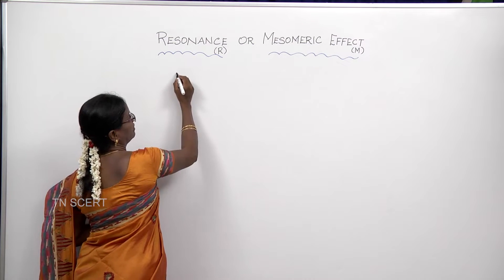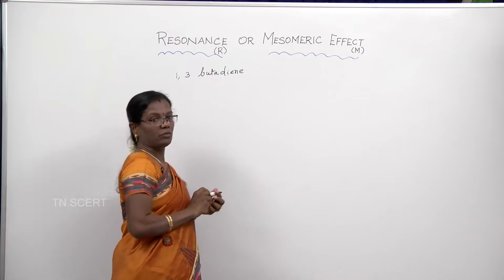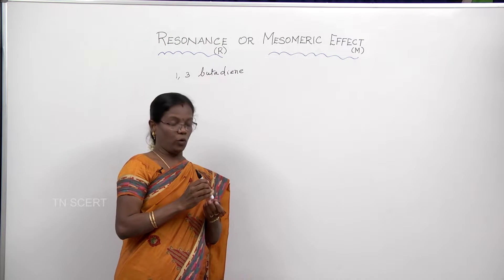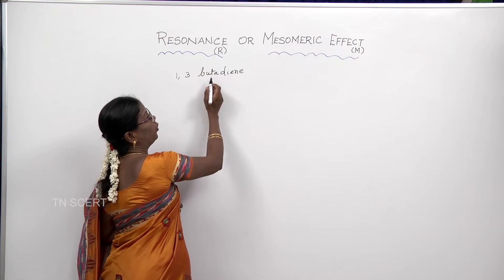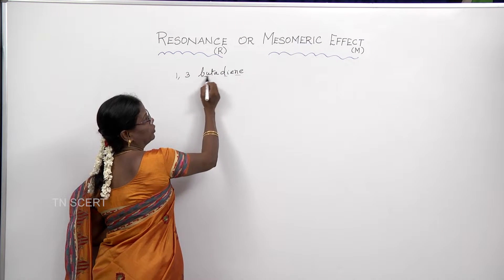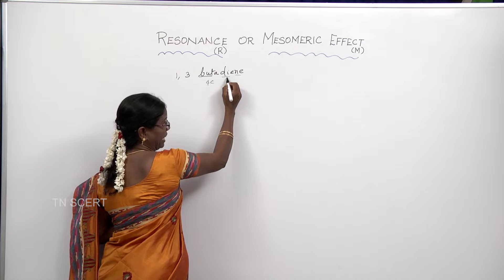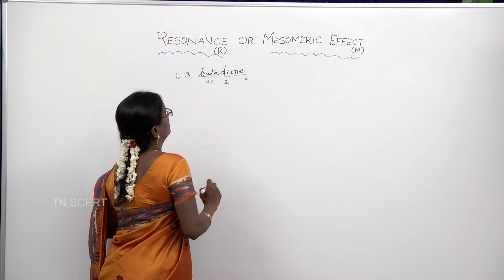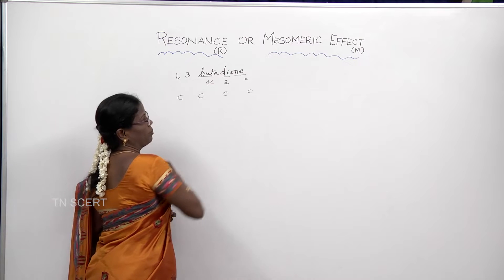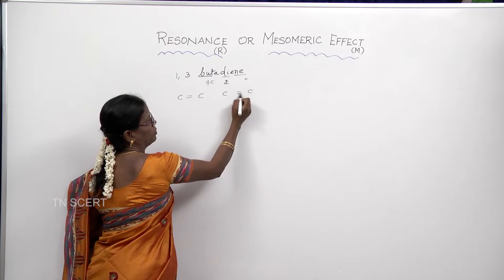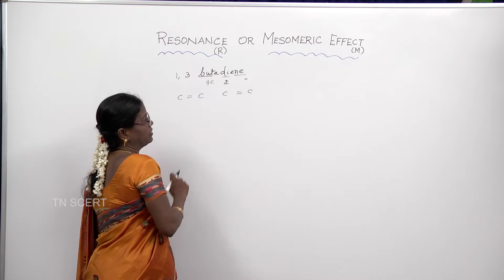Let us take one example: 1,3-butadiene, a very good example for explaining resonance. Without knowing the formula, we can write it easily if we know that 'but' means four carbon atoms, 'di' means two, and 'ene' means double bond. Since it contains four carbon atoms with two double bonds, we write four carbon atoms and place two double bonds. We should not put the double bonds adjacent to each other, because to explain resonance we need conjugation.